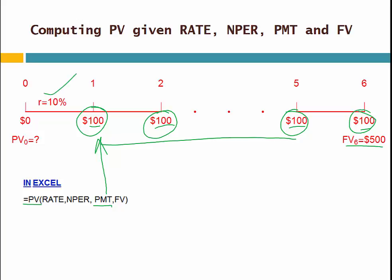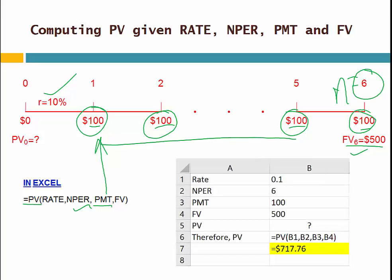Let's see how we can do this problem. We know the rate, we know the payment, we know the future value, and we know the number of periods N. In our case, N equals 6. Here I have a small Excel sheet. You can see the rate is 10%, number of period is 6, payment is 100, future value is 500. You need to find the present value. Simply use the PV formula: parenthesis, B1 refers to rate, B2 refers to number of period, B3 refers to payment, B4 refers to future value.